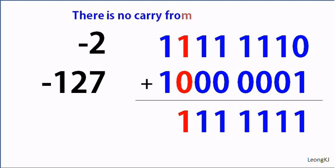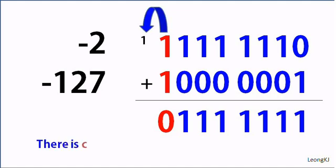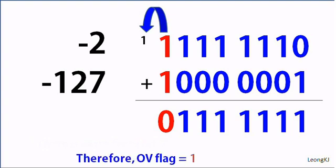There is no carry from the addition of bit 6. There is a carry from the addition of bit 7. The OV flag is therefore set to 1.